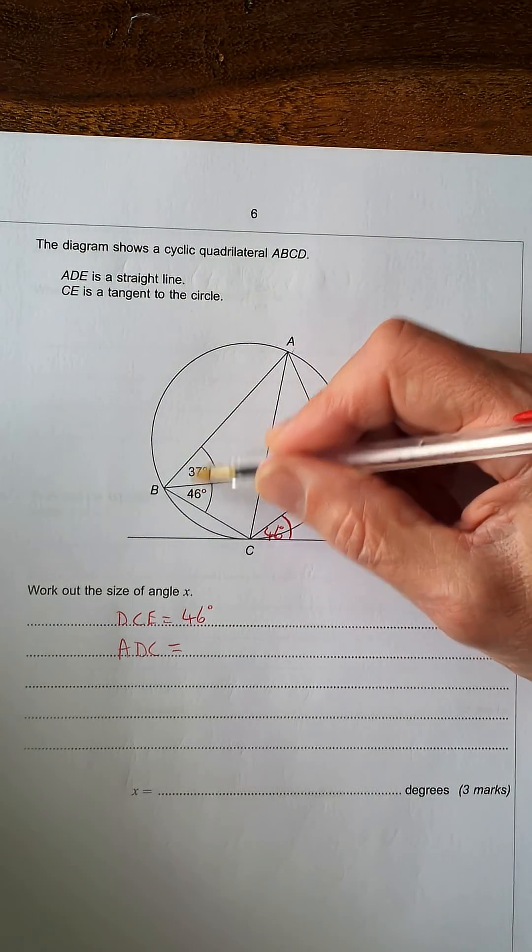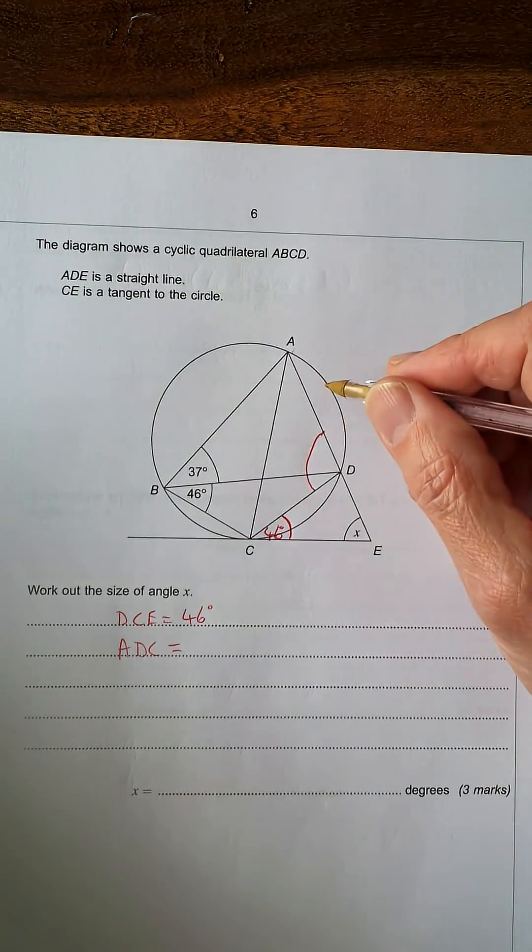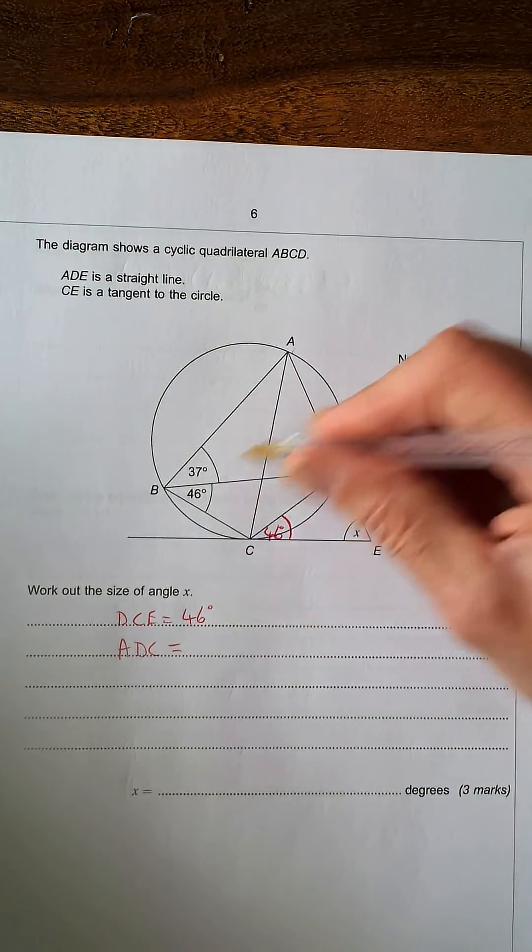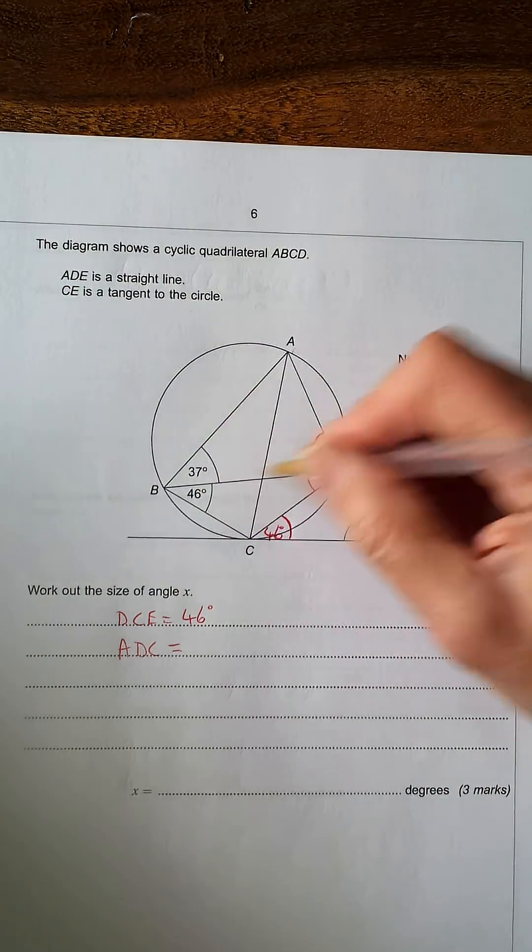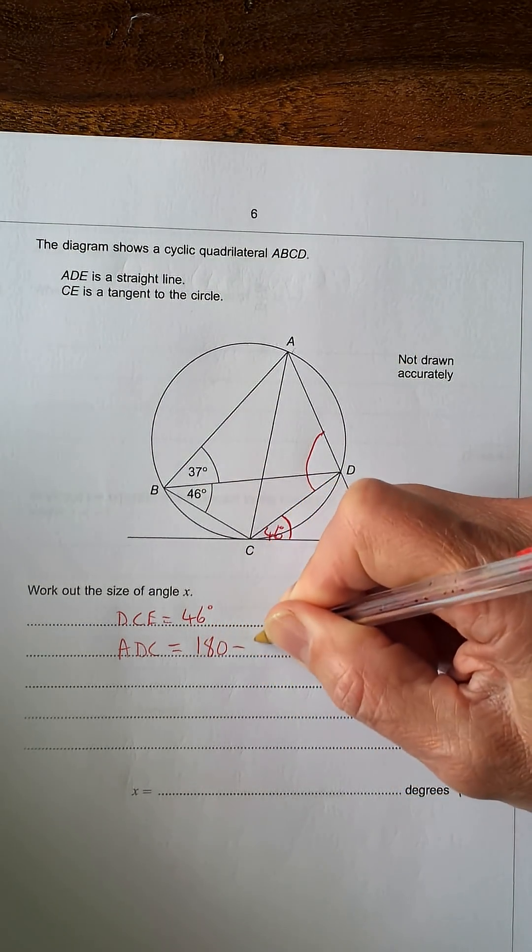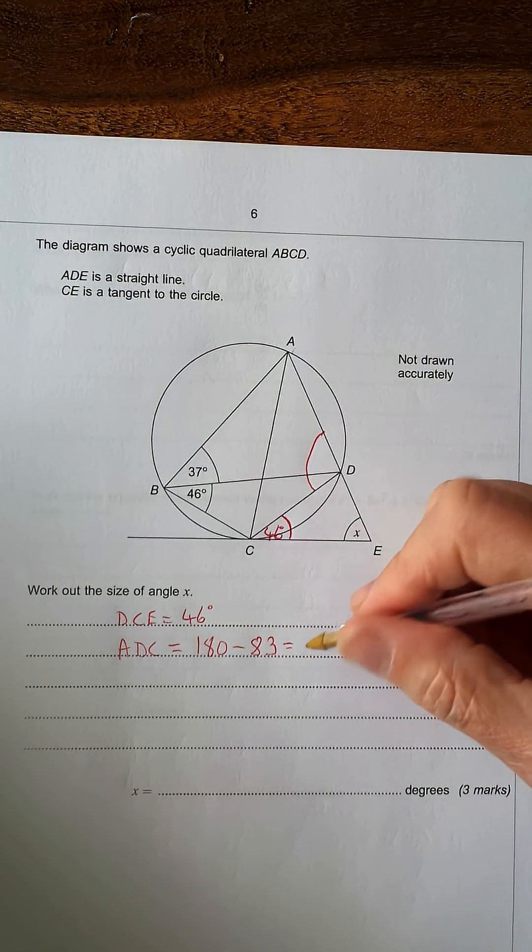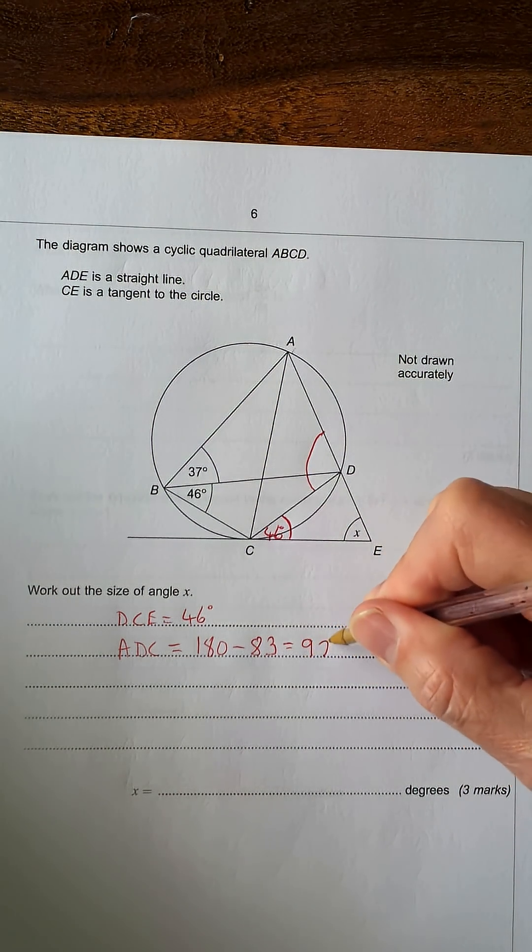So we've got this one here, 46 and 37, adds up to 83. And as I said, these add up to 180 degrees, so it's 180 minus 83. And we get 97 degrees.